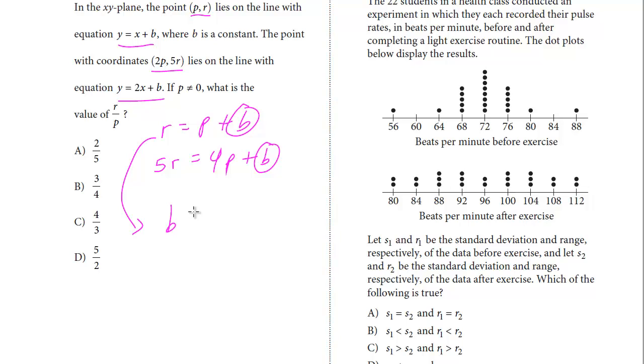So here's our B. I'm going to solve it for B. Isolate B. So B equals R minus P. Here, solve for B. I'm going to subtract 4P. I get 5R minus 4P.